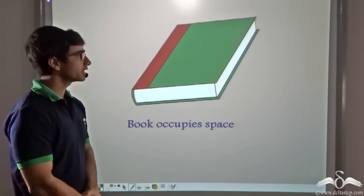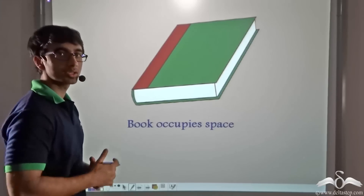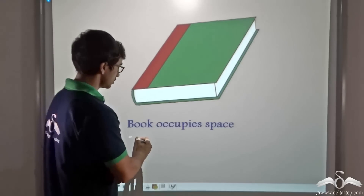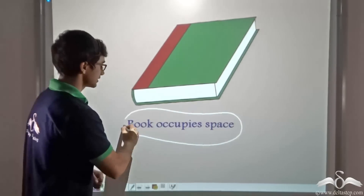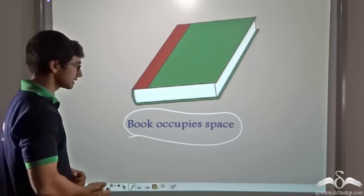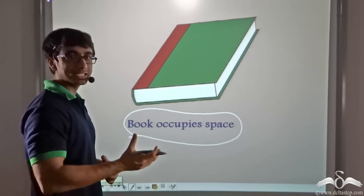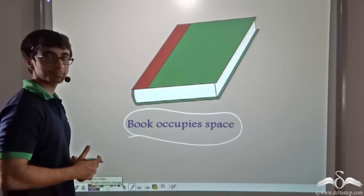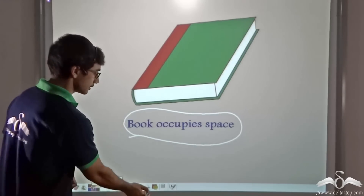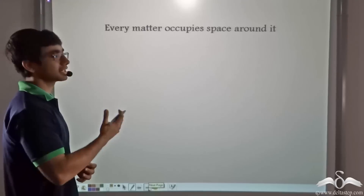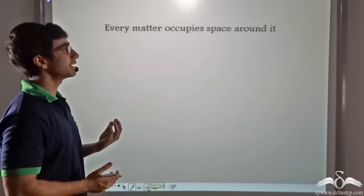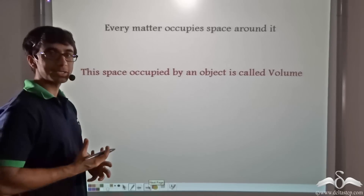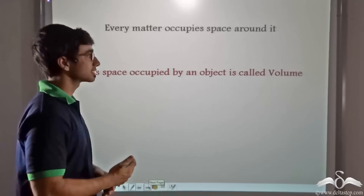Look at the picture. Over here you will find that a book has been shown. Now it is common knowledge that a book occupies a certain amount of space. If you keep a book at any place or even hold it in your hand, it will occupy a certain amount of space, and this is true not only for the book but for any matter. Any or every matter will occupy space around it. So this space that is being occupied by an object is known as volume.